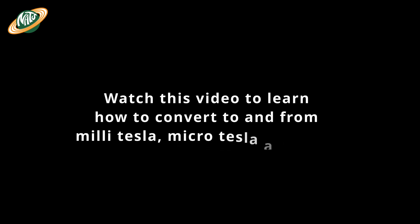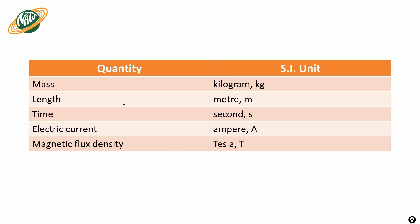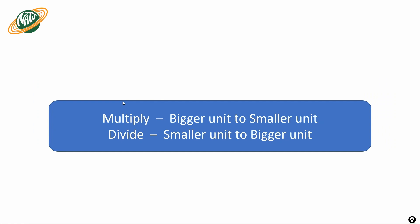These are the standard units which you usually come across: mass, length, time, current — with units kilogram, meter, second, amperes. The last one is really important: magnetic flux density. How do we measure magnetic flux density? Using the unit tesla.